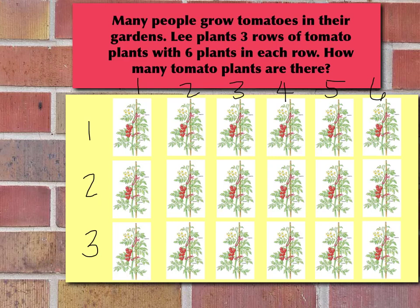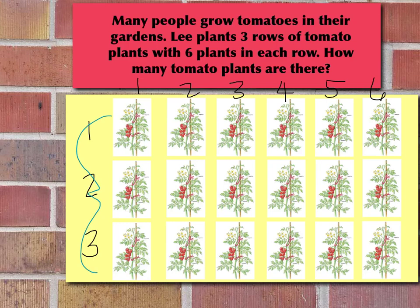So then we have to figure out how many tomato plants there are, and we're going to do that by counting: one, two, three, four, five, six, seven, eight, nine, ten, eleven, twelve, thirteen, fourteen, fifteen, sixteen, seventeen, eighteen. So now we can tell that three rows times six columns equals eighteen plants.